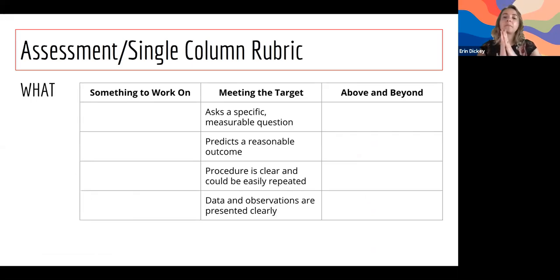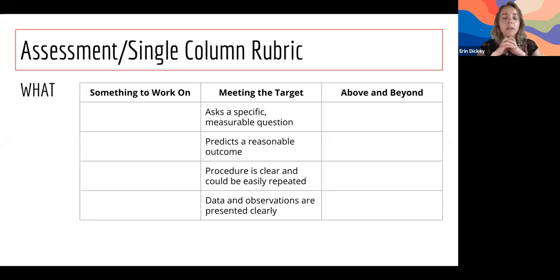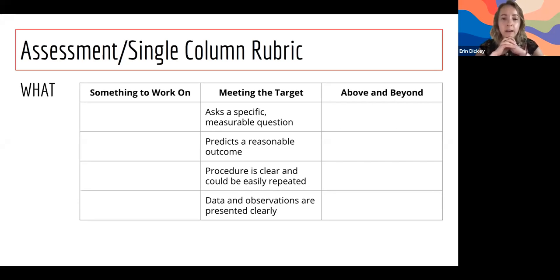Here's an example of a single point rubric that could work for younger grades — learning targets for a science project going through the scientific method for something like a science fair. I relabeled the columns: 'Something to Work On,' 'Meeting the Target,' and 'Above and Beyond' — terms elementary students can certainly understand. This is a better example with student-friendly language; younger students would be learning words like procedure, data, and observations as part of their science study anyway.